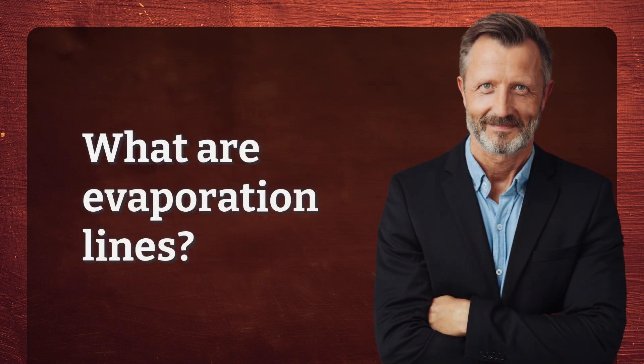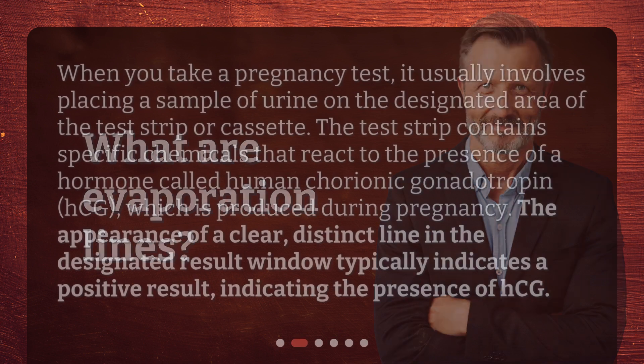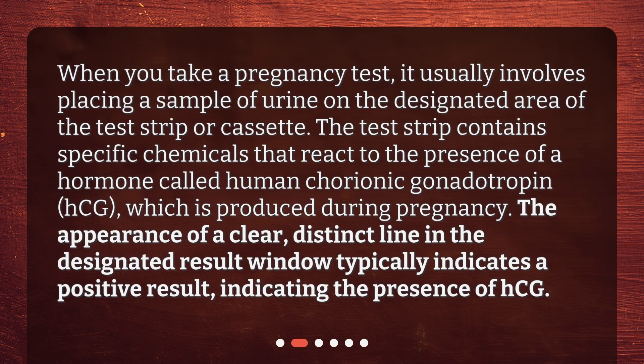What are evaporation lines? When you take a pregnancy test, it usually involves placing a sample of urine on the designated area of the test strip or cassette. The test strip contains specific chemicals that react to the presence of a hormone called human chorionic gonadotropin, HCG, which is produced during pregnancy. The appearance of a clear, distinct line in the designated result window typically indicates a positive result, indicating the presence of HCG.